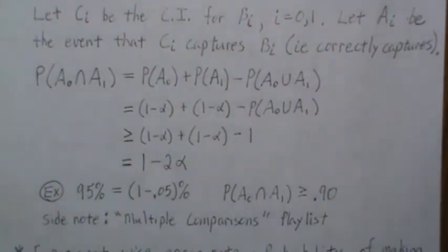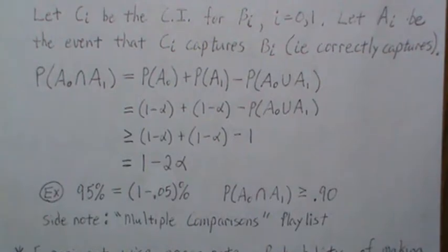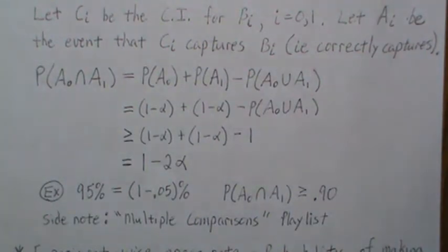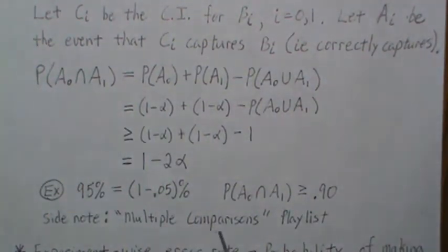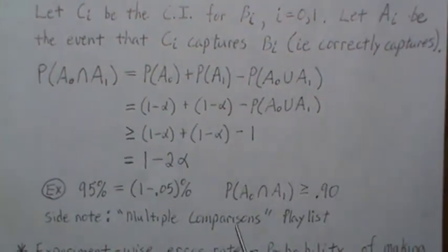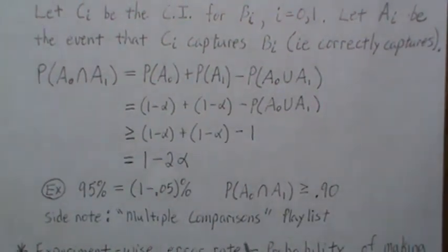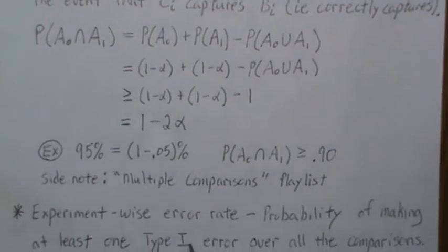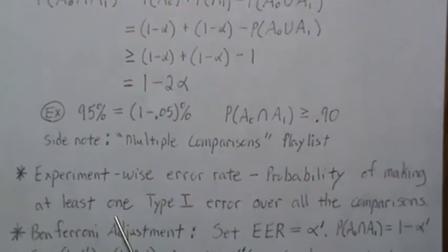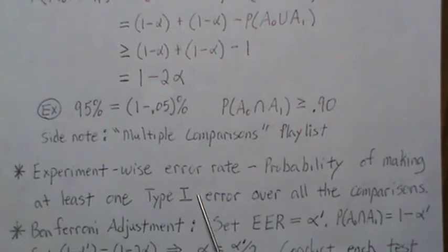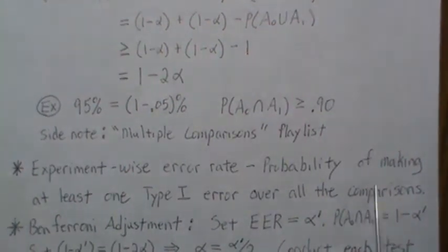This is a whole category called multiple comparisons. I've started a playlist on multiple comparisons—right now there's only two videos, proofs of the Bonferroni-Holm adjustment and the Sidak adjustment. The topic we're discussing here is what's called the experiment-wise error rate, the probability of making at least one type one error over all comparisons.